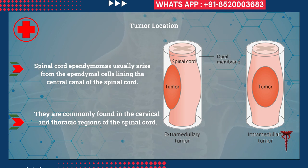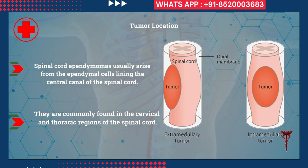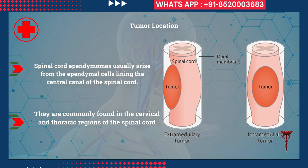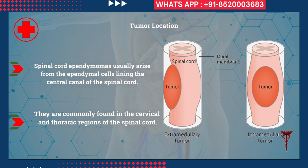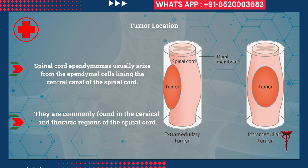First, you need to know the exact tumor location. Spinal cord ependymomas usually arise from the ependymal cells lining the central canal of the spinal cord. Unlike extramedullary tumors, which arise outside the spinal cord and compress it, ependymomas are intramedullary tumors — they arise from within the spinal cord and cause bulging of the spinal cord. They are most commonly found in the cervical and thoracic regions.